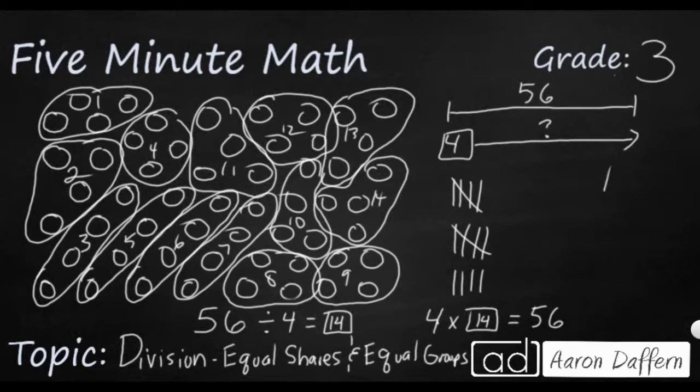Four times four is 16. I want to carry that one. Four times one is four. Add that one back in, and my answer is going to be five. So my answer is going to be 56.